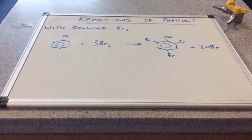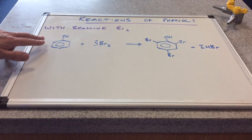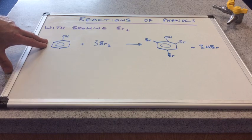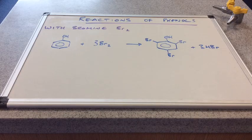So we'll move on to the reaction of phenol with bromine now. You can see I've written it up there on the board. I've shown a more displayed type formula for the phenol. You can see why when you look at the product there.